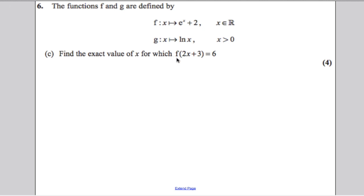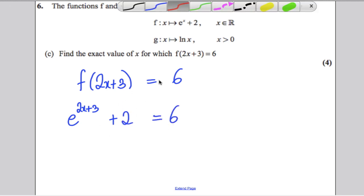Part C, find the exact value of f of 2x plus 3 is equal to 6. So, we are trying to solve f of 2x plus 3 is equal to 6. So, substitute 2x plus 3 in here and you would get e to the 2x plus 3 plus 2 is equal to 6. Now, several people totally forgot this plus 2. This plus 2 here still needs to be here. The only thing you're changing is instead of writing x, you're writing 2x plus 3.